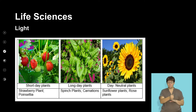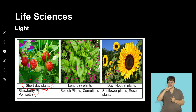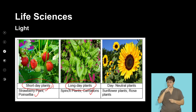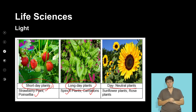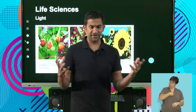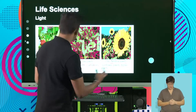We have our short day plants, which require shorter durations of exposure to light — some of these include strawberry plants and poinsettia. Others are long day plants requiring long exposure to light, such as carnations and some spinach plants. We also have day-neutral plants, such as sunflowers and roses, that get along with whatever sunlight they're exposed to throughout the day, which is sufficient for producing beautiful flowers.